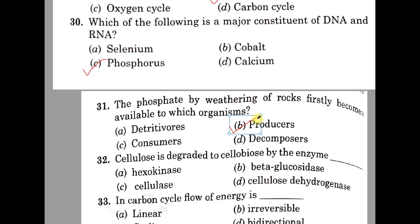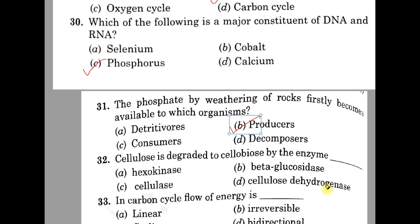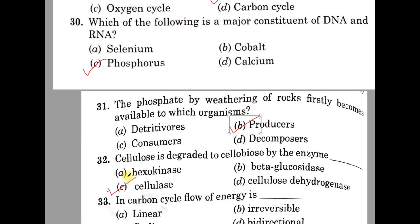Question number 32. Cellulose is degraded to cellobiose by which enzyme? A: Hansokinase, B: Beta-glucosidase, C: Cellulase, D: Hydrogelase. Cellulose is broken to cellobiose by the action of the enzyme cellulase. So the correct answer is C. After that, beta-glucosidase acts on cellobiose so that glucose is produced.